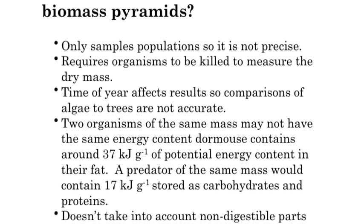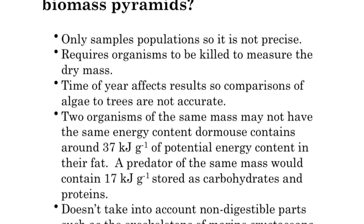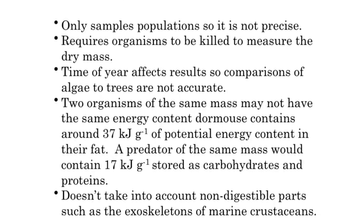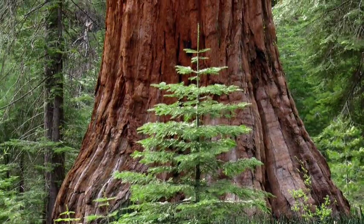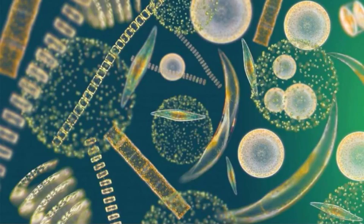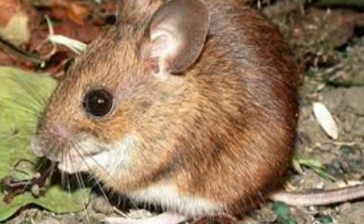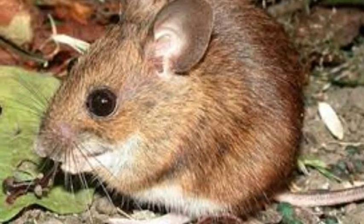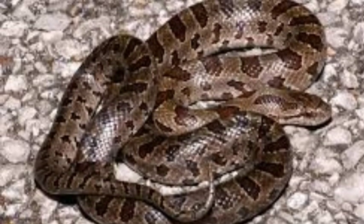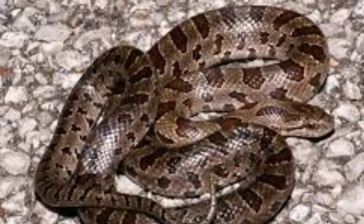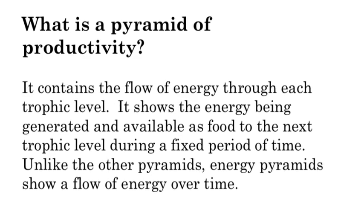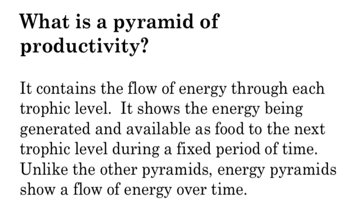Disadvantages of the biomass pyramid: you only sample population size rather than counting each one, so it's accurate but not very precise. It requires killing the organism, which is a problem. The time of year can affect it — a tree in summer has a lot of biomass but not in winter, while algae might be consistently productive all year. Also, a mouse might store lots of energy in fat, whereas a snake of similar size might store it in protein or carbohydrates with less energy per unit mass — that throws off productivity numbers.